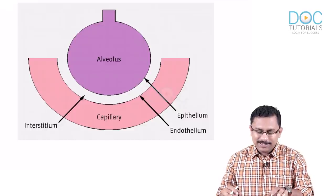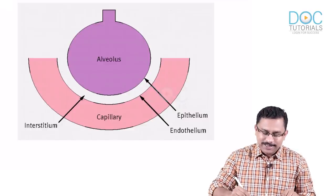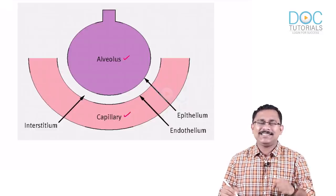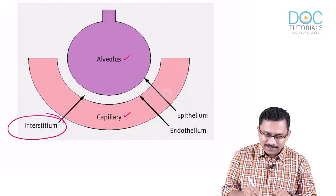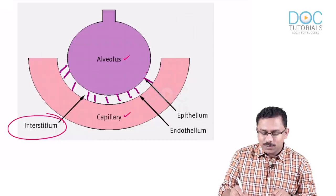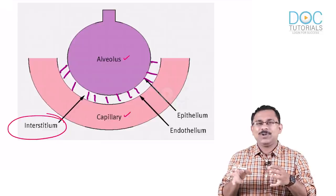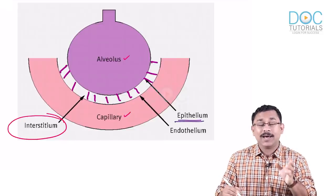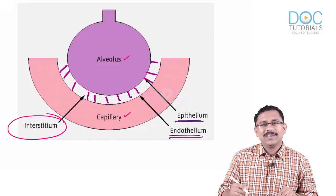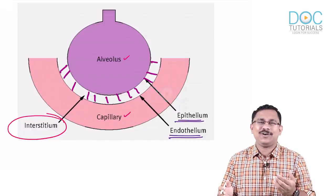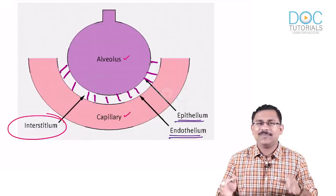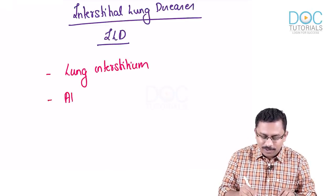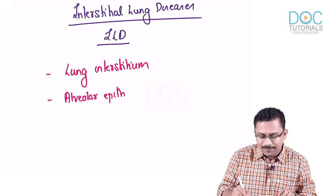Let me draw your attention to a picture. You are seeing the alveolus, the capillary, and between them the alveolo-capillary interstitium — that is your interstitium. In ILDs, the disease process mainly involves the interstitium, but you also have an adjacent alveolar epithelium and capillary endothelium. So in addition to the interstitium, ILD also involves the alveolar epithelium and capillary endothelium.